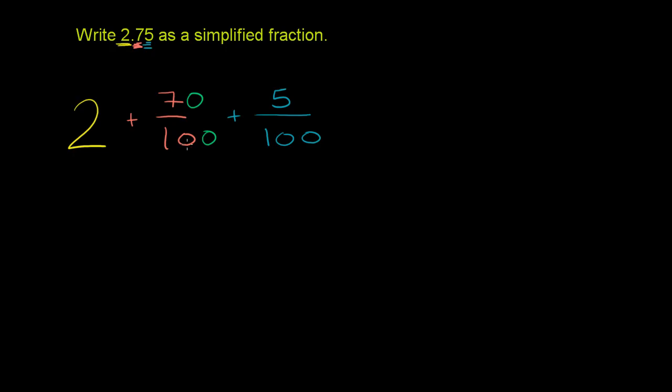Now we can add these two. What is 70 plus 5? 70 plus 5 is 75. And our denominator is 100.